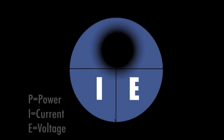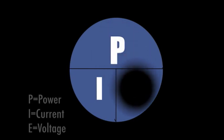Likewise, if I were solving for E, voltage, I would simply cover the E. What remains is P divided by I.